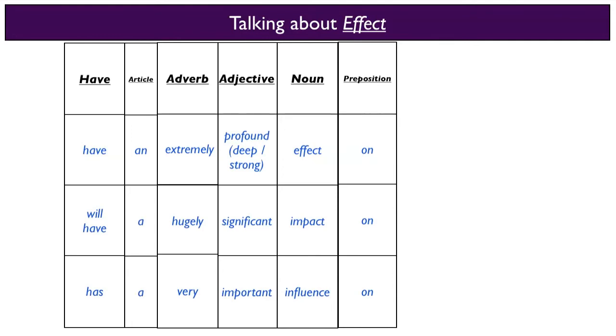Don't forget you'll need an article between the verb and the adverb. And you should be careful that these articles match the first letter of the adverb. So the first letter of extremely is a vowel, therefore you need an. The first letter of hugely is a h, a consonant, therefore it needs a. V, consonant, needs a.